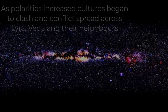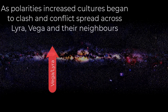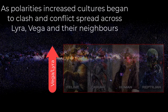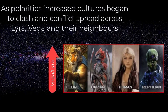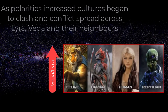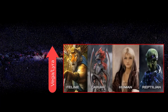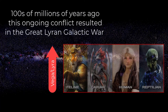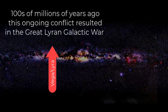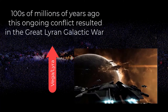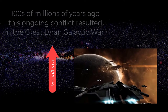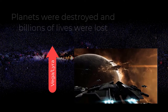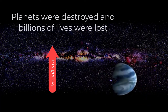As polarities increased, cultures began to clash and conflict spread across Lyra, Vega and their neighbours. Hundreds of millions of years ago, this ongoing conflict resulted in the Great Lyran Galactic War. Planets were destroyed and billions of lives were lost.